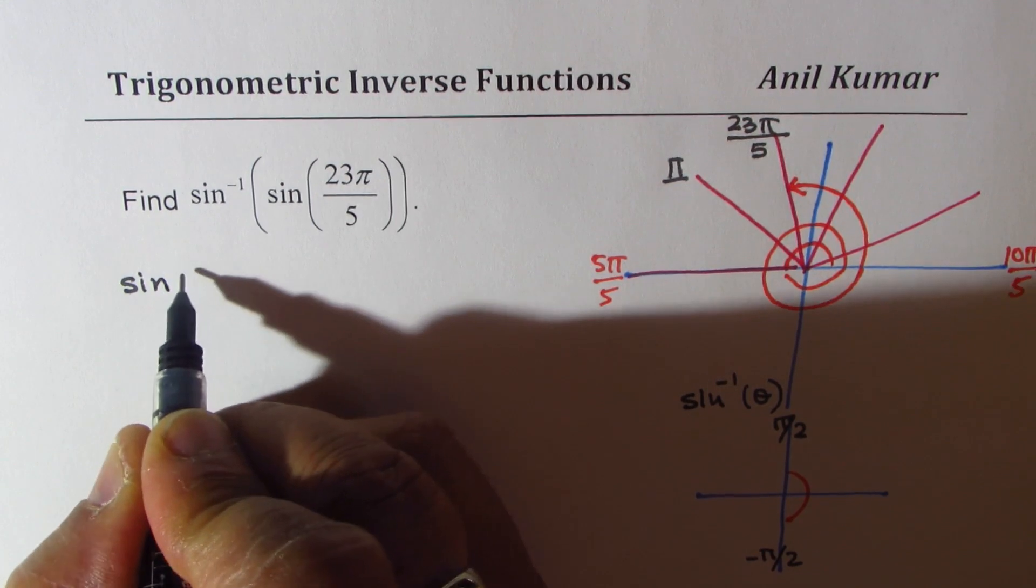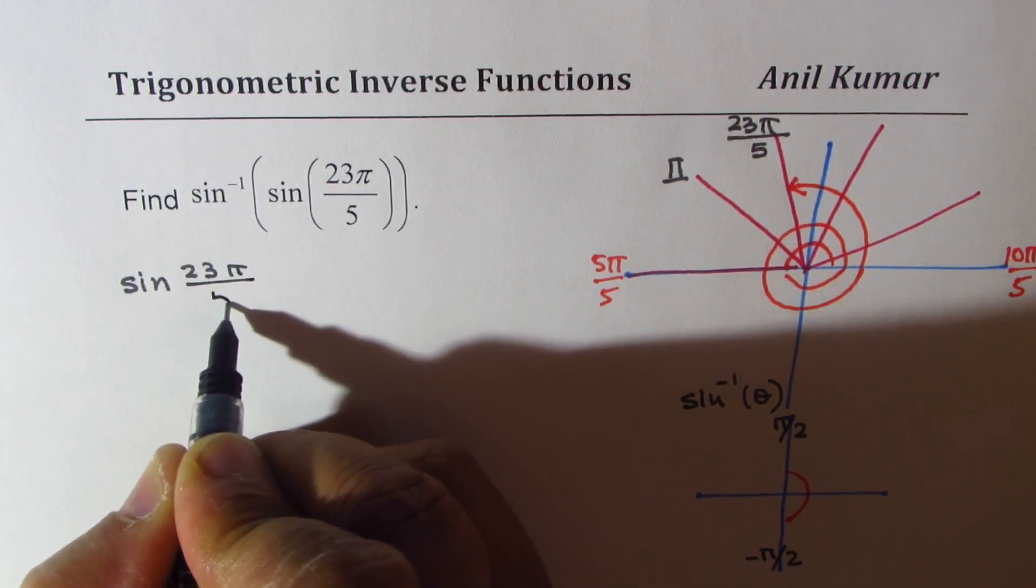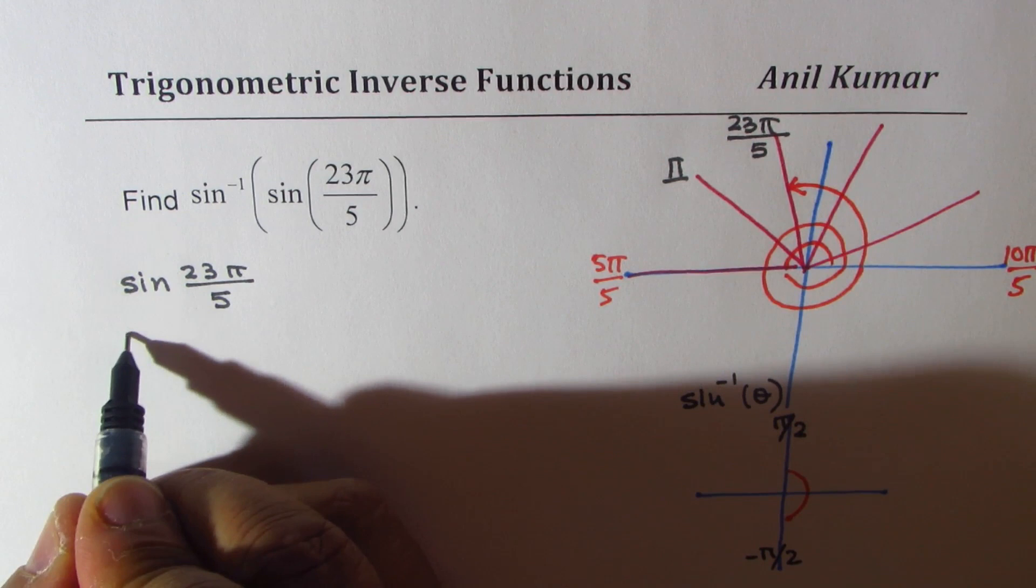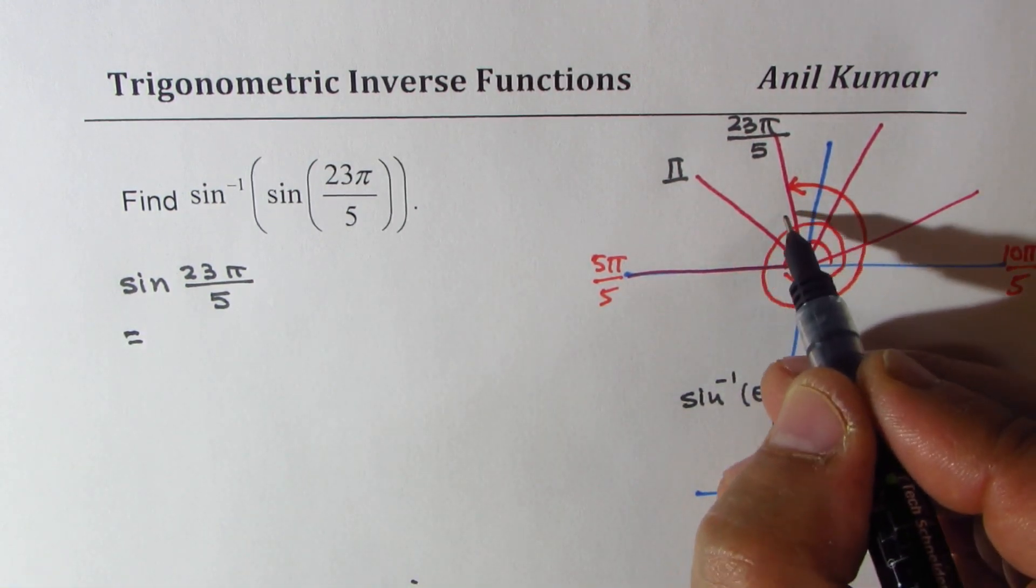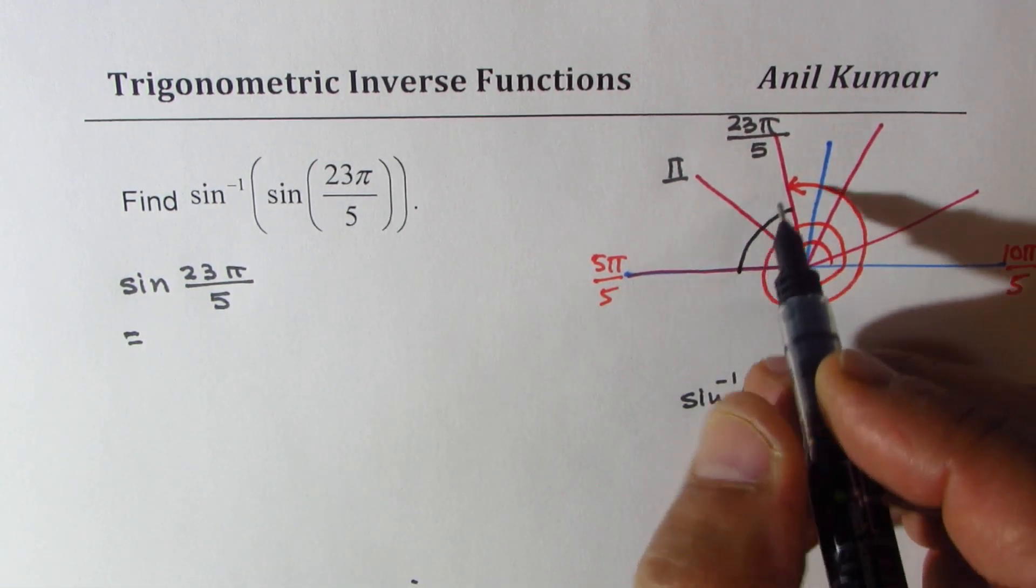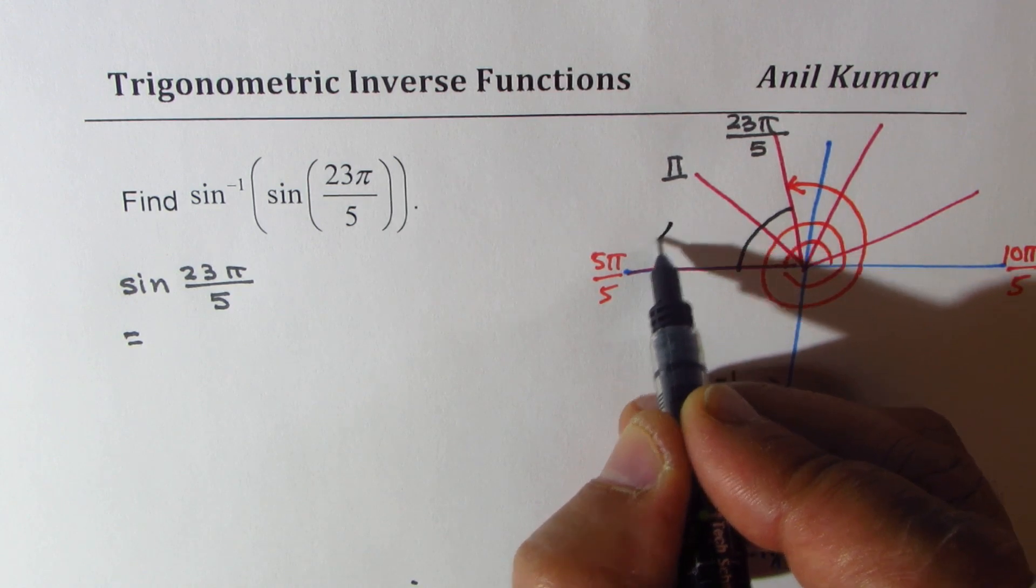So what you also notice is, let's talk about sine 23π by 5. Now clearly, this is equal to, now here, what is the acute angle? Now this acute angle, we can say α,